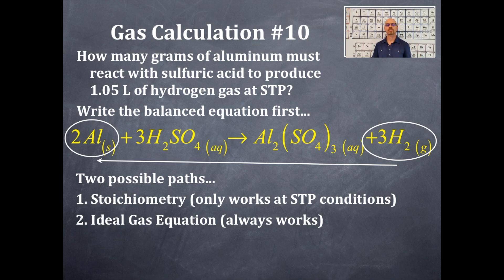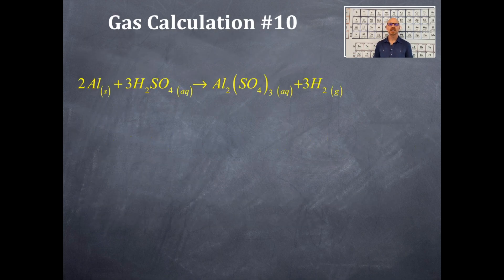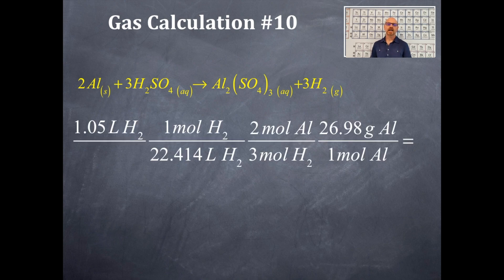There are two possible paths in which we can take. The first one is using stoichiometry, and this only works because this is at STP. If it were not at STP, then we couldn't do the stoichiometry path, and we would always have to use the ideal gas equation. We're going to convert the 1.05 liters of hydrogen gas using 22.414 liters of hydrogen per one mole, because this is at STP. We're going to use the mole ratio of 3 to 2, that's 3 moles of hydrogen to 2 moles of aluminum, and then the molar mass for aluminum. We cancel out our units of liters, moles, and moles, and then we get grams of aluminum. Here's our answer, 0.843 grams of aluminum. That's path number one.